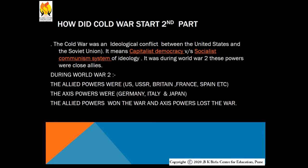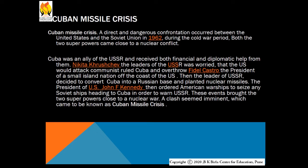How did the Cold War start? The Cold War was an ideological conflict between the United States and the Soviet Union — capitalist democracy versus socialist communism. During World War II, these powers were close allies. The Allied Powers were the US, USSR, Britain, France, and others, while the Axis Powers were Germany, Italy, and Japan. The Allied Powers won the war and the Axis Powers lost.